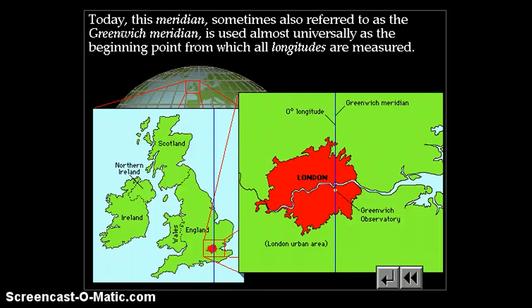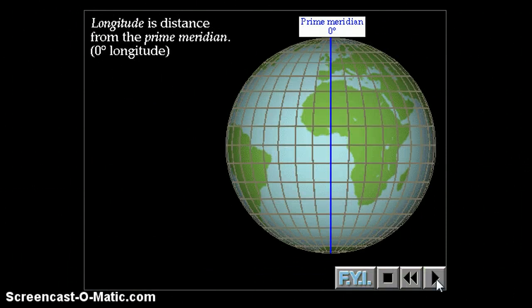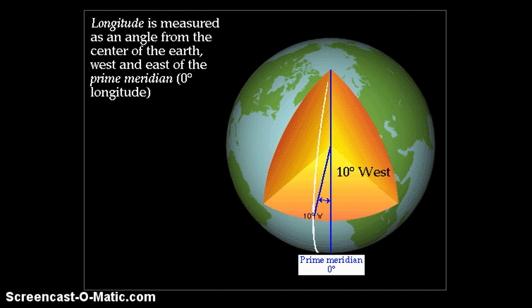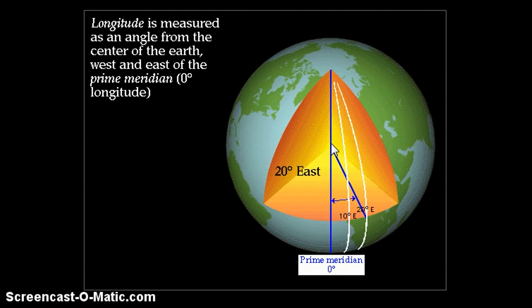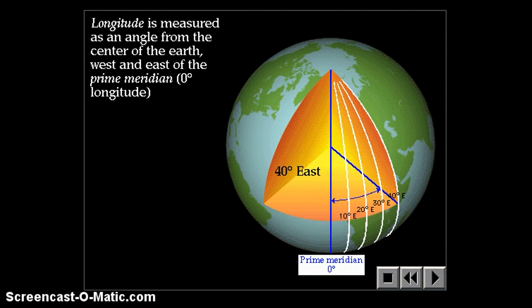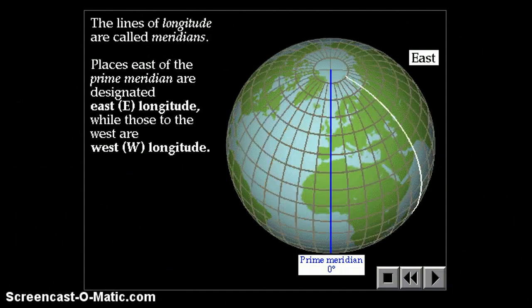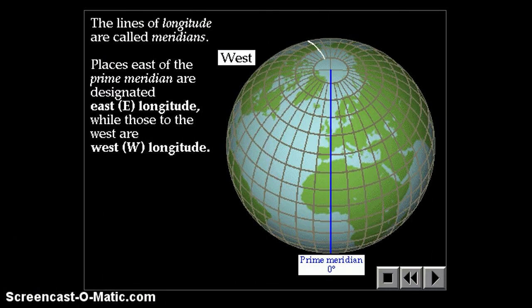This meridian through Greenwich, England is sometimes referred to as the Greenwich Meridian or the prime meridian, and it's used almost universally as the beginning point from which all longitudes are measured. Longitude is also given as a degree angle measurement, much in the same way that latitude is. It's the angle between the prime meridian, the center of the Earth, and the point you're interested in. Lines of longitude are also called meridians. Places east of the prime meridian are designated with an E for east longitude, and places west are designated with a W for west longitude.